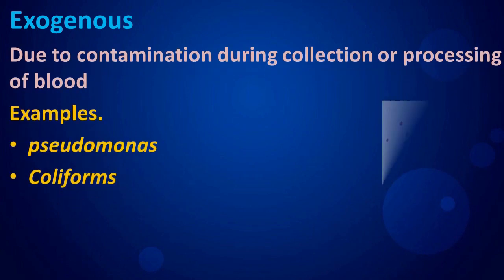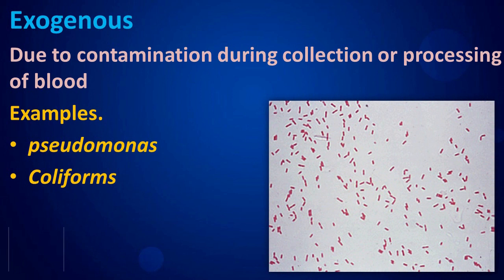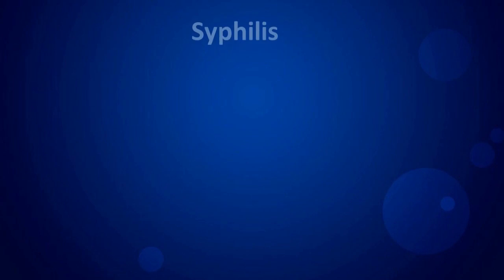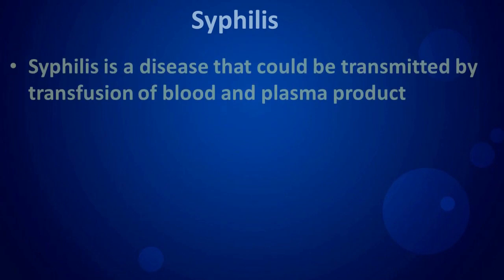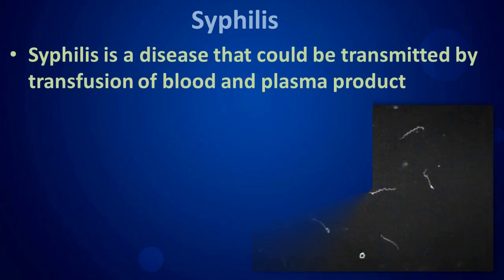Exogenous bacterial infections are due to contamination during collection or processing of blood. Examples include Pseudomonas and coliforms. Syphilis is a disease that could be transmitted by transfusion of blood and plasma products.